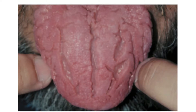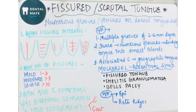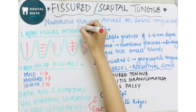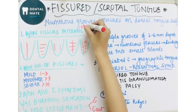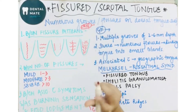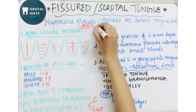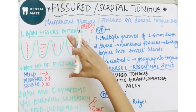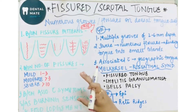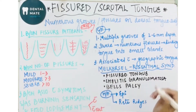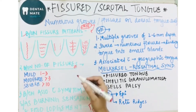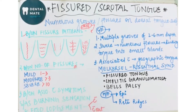It is very important to study the classification — this was asked in my viva. Fissured or scrotal tongue can be classified under three different headings: first, based on fissure patterns; second, based on the number of fissures; and third, whether the fissured tongue is associated with symptoms such as burning sensation and food lodgment.